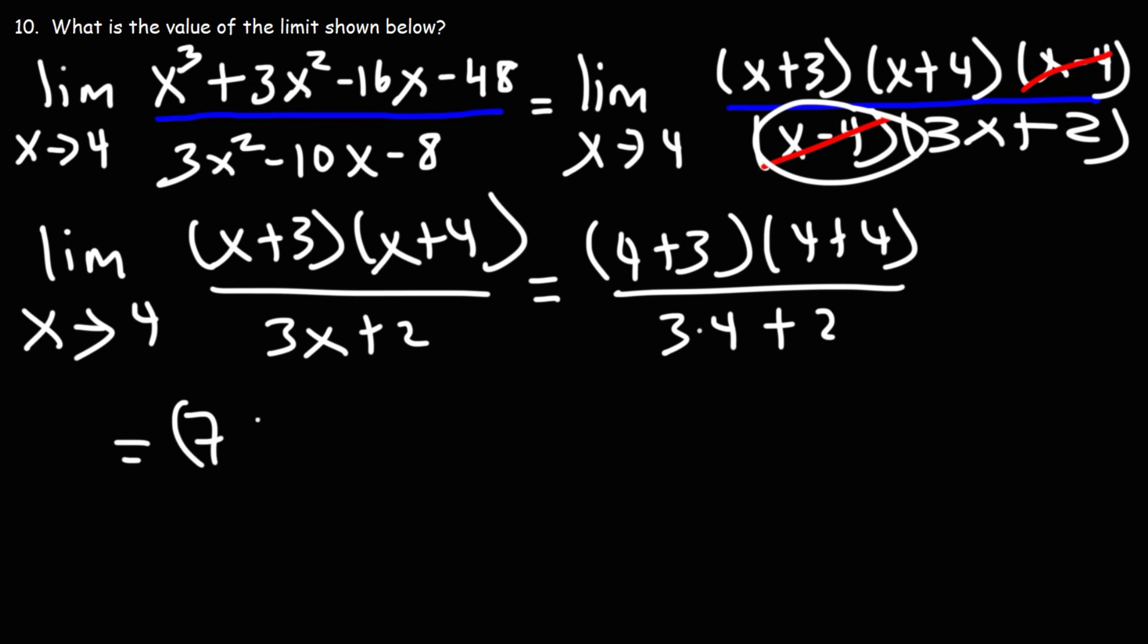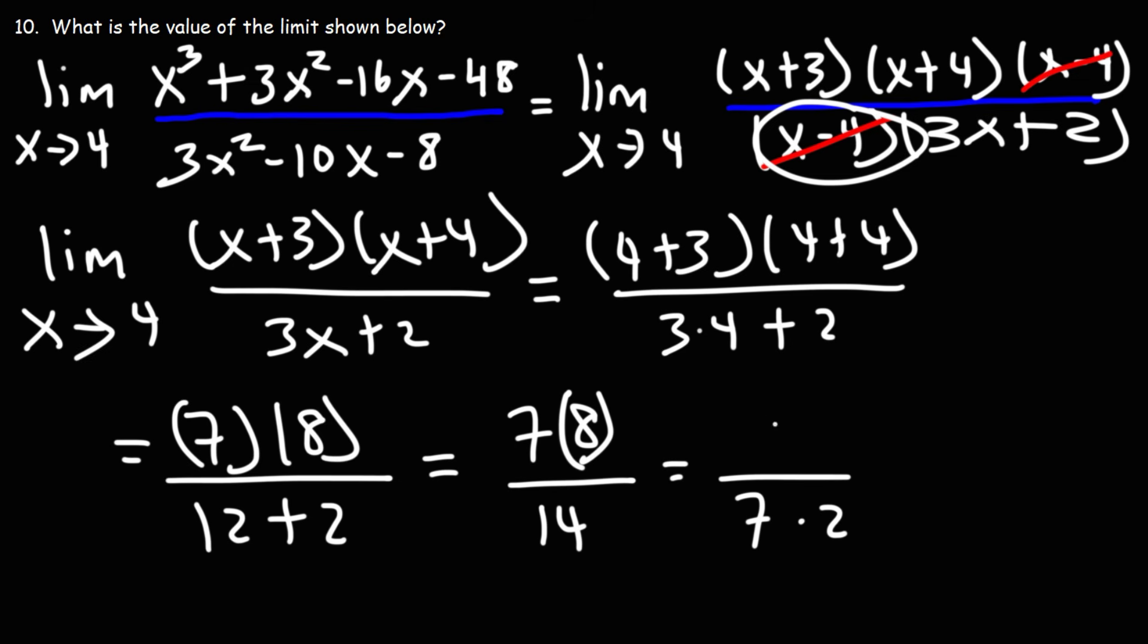4 plus 3 is 7, 4 plus 4 is 8, 3 times 4 is 12, 12 plus 2 is 14. Now 14 is 7 times 2, and 8 we can break that up into 2 times 4.